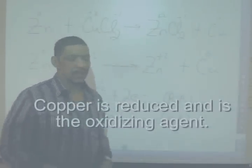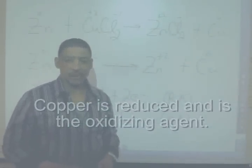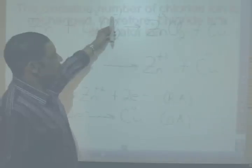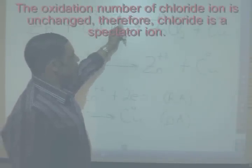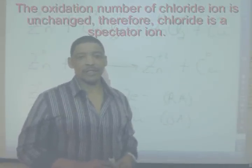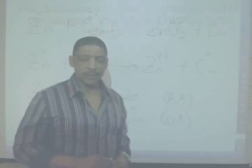Since these oxidation numbers have changed, this is known as a redox reaction. Notice that chlorine or chloride starts at a minus one and ends at a minus one. It did not participate in the reaction and is therefore a spectator ion.